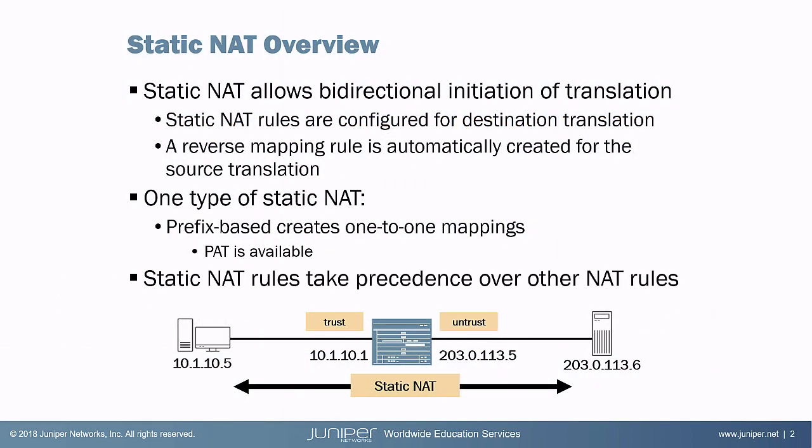So you might ask yourself, what is Static NAT? It's basically a type of NAT — network address translation — that allows bi-directional initiation of translation. That means you configure a Static NAT rule that will translate a packet in one direction, and then it will also translate the packet in another direction. So it allows you to configure one NAT rule and translation happens both ways.